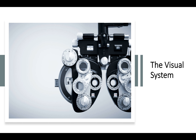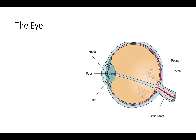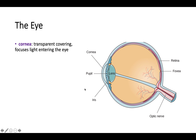First up, we have the visual system. We're going to talk about the eye, color vision, and depth perception in this section. Here is a pretty rudimentary but informative diagram of the eye. First up, we have the cornea — this layer on the outside of the eye. The cornea is a transparent covering that focuses light that enters the eye, starting to filter it and make it manageable so that our eye can figure out what it is detecting.